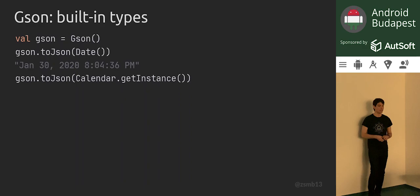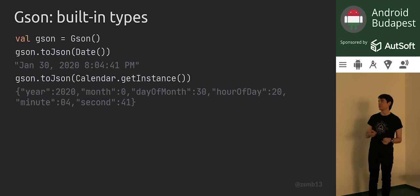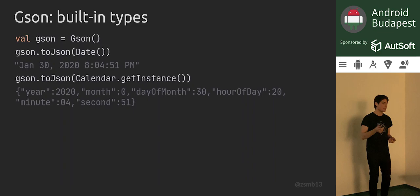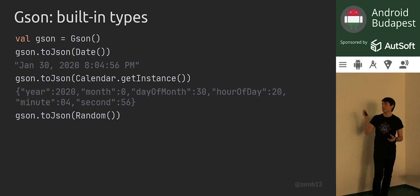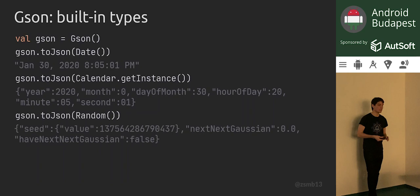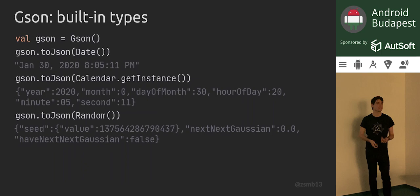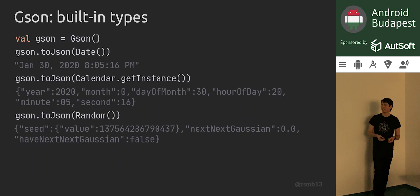What if we serialize a Calendar, which is sort of the same thing? In this case, GSON will actually give you a JSON object with all sorts of implementation details from inside the Calendar class, like day of month, hour of day, and similar fields. And if we serialize a Random instance from Java Util, we can see even more exciting things: we get a weird nested object for the seed value, with wonderful fields like haveNext and nextGaussian in there — definitely things you don't want to be sending over the network.